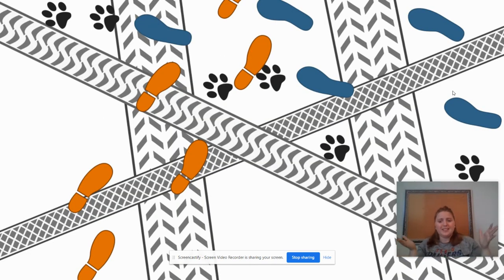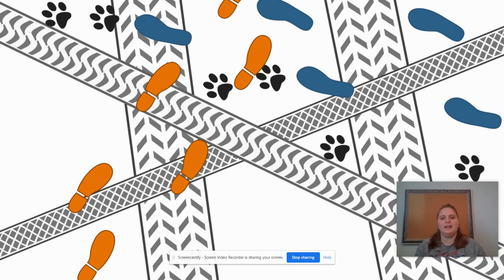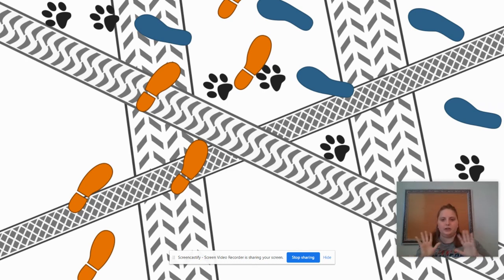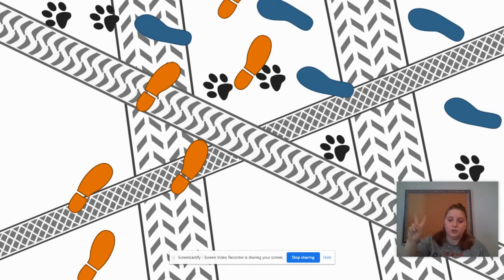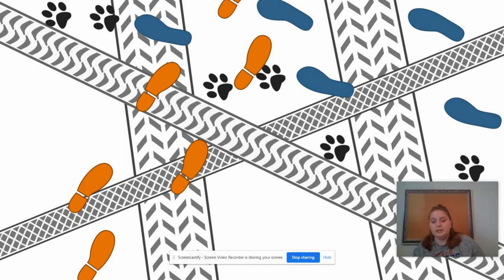First of all, let's take a look at this picture here. So here we have a couple different tire tracks, some paw prints, and some footprints. Each of these tire, foot, and paw prints represents someone who came to visit Miss Hewitt. I started off the day having two boxes of Girl Scout cookies, and I noticed that at the end of everyone coming to visit, my two boxes were gone.